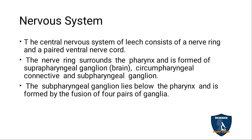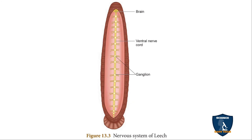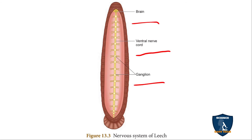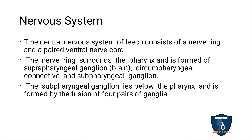Next, the nervous system. The central nervous system consists of a nerve ring and a pair of ventral nerve cords. You can see in the diagram the ventral cord, which is like the spinal cord, and the brain — that is the ganglion. The nerve ring is surrounded by the pharynx and is formed of the suprapharyngeal ganglion, which is also called the brain.